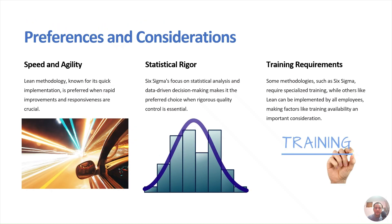Key considerations when selecting a methodology: first, speed and agility — lean is known for quick implementation, whereas Six Sigma takes longer. If you have a short timeframe, like two weeks, 8D problem solving can be used. Second, statistical rigor — Six Sigma focuses mainly on statistical analysis and is data-driven, whereas 8D, PDCA, and lean are more process-driven approaches. If you do not have much data, use one of the process-driven methods.